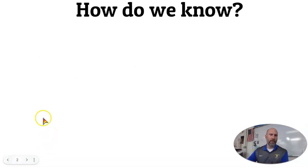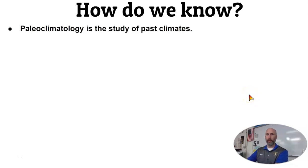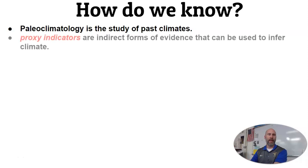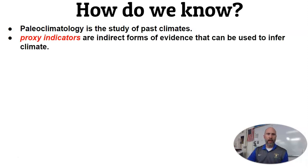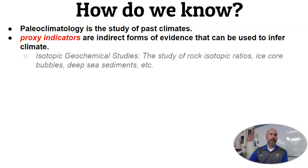We're going to be looking at past climates. Now, how do we know about past climates if we didn't have ancient weathermen and people writing all this stuff down? Paleoclimatology is the study of past climates, and we use proxy indicators as indirect forms of evidence that we can use to infer what the climate was like. They're called proxy indicators.